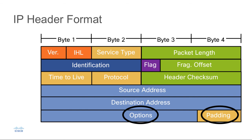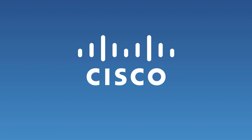These two fields are followed by the options and padding fields. This is a field that varies in length from 0 to some multiple of 32 bits. If the option values are not a multiple of 32 bits, we pad that with zeros to ensure that the header meets the minimum 20-byte size.